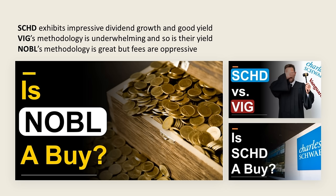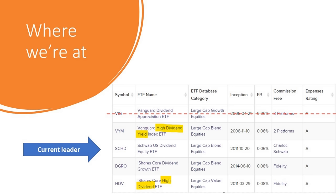These are the three pieces we've done already. We concluded that SCHD — Schwab's dividend ETF, the second largest dividend ETF — exhibits impressive dividend growth and good yield. VIG, the largest dividend ETF, has an underwhelming methodology and underwhelming yield. And Noble, our most recent video, has a great methodology and we love aristocrats, but the fees are oppressive.